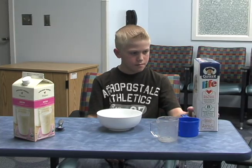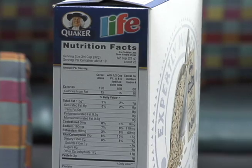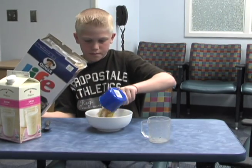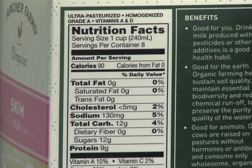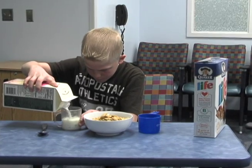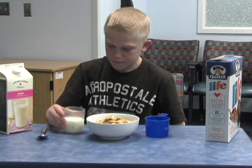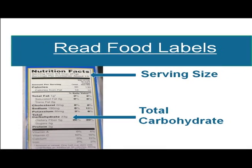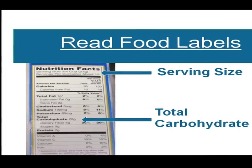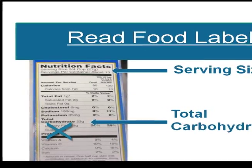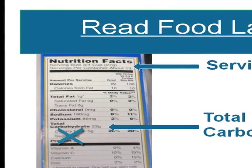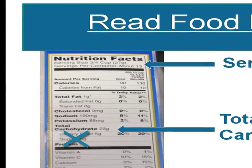Remember to use measuring cups for accurate carbohydrate counting. The Nutrition Facts Label is one of the best places to look for the carbohydrate content, and you can find labels on most packaged food products. You only need to look at serving size and total carbohydrates to determine the amount of carbs in a food product. Serving size is important because the food label lists all nutrients based on one serving. The total carbohydrates value is used for your insulin dose.